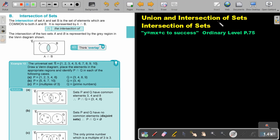Union and intersection of sets. We are now going to focus on the intersection of sets. You will find this on page 75 in the Namibia Ordinary Level Mathematics Textbook, Y equals Mx plus C to success. Intersection of sets. The intersection of set A and set B is the set of elements which are common to both A and B. It is represented by A intersection B and that is the sign.